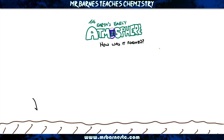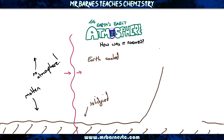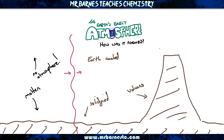When the Earth first formed, it was a molten ball. There was no atmosphere whatsoever. However, as the Earth cooled, the ground solidified and we started to get volcanoes forming.